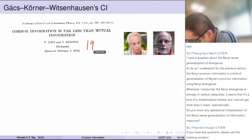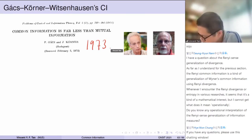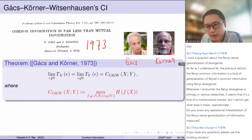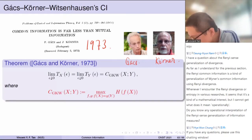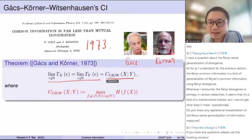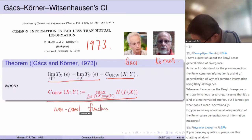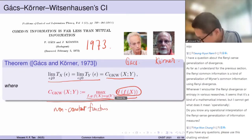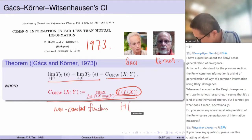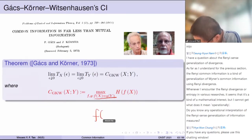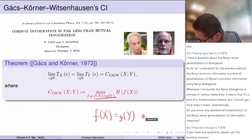These two quantities were characterized in a 1973 paper by Gács — Peter Gács — and Körner. They showed that these two limits, as you take epsilon to become very small, give you a single-letter quantity: you maximize over all non-constant functions the entropy H(f(X)). It doesn't matter whether we write H(f(X)) or H(g(Y)) since these two random variables agree almost surely, so f(X) equals g(Y) almost surely.